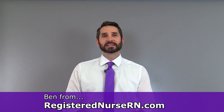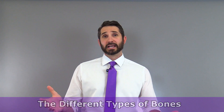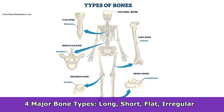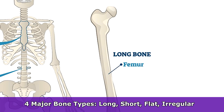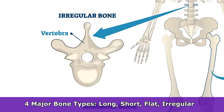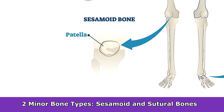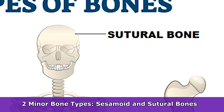Hello everyone. In this anatomy lesson I'm going to talk about the different types of bones found in the human skeleton. Bones come in different shapes, so anatomists classify them into different categories. We have four major categories of bones: long bones, short bones, flat bones, and irregular bones. We also have two minor categories which are the sesamoid bones and the sutural bones.